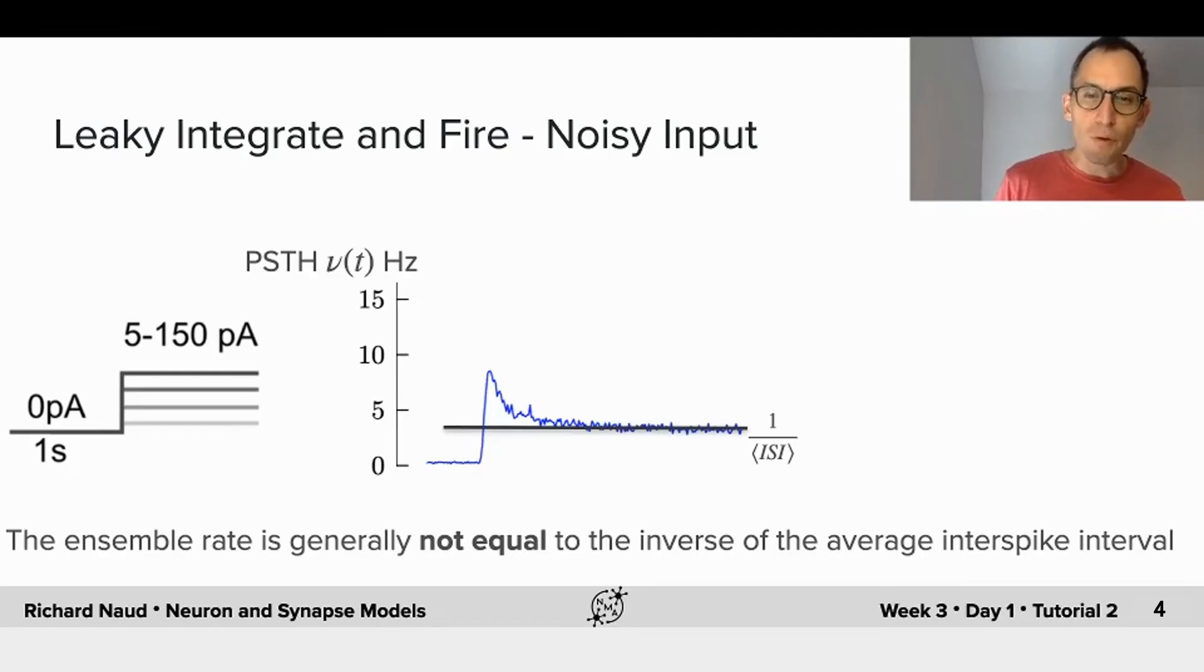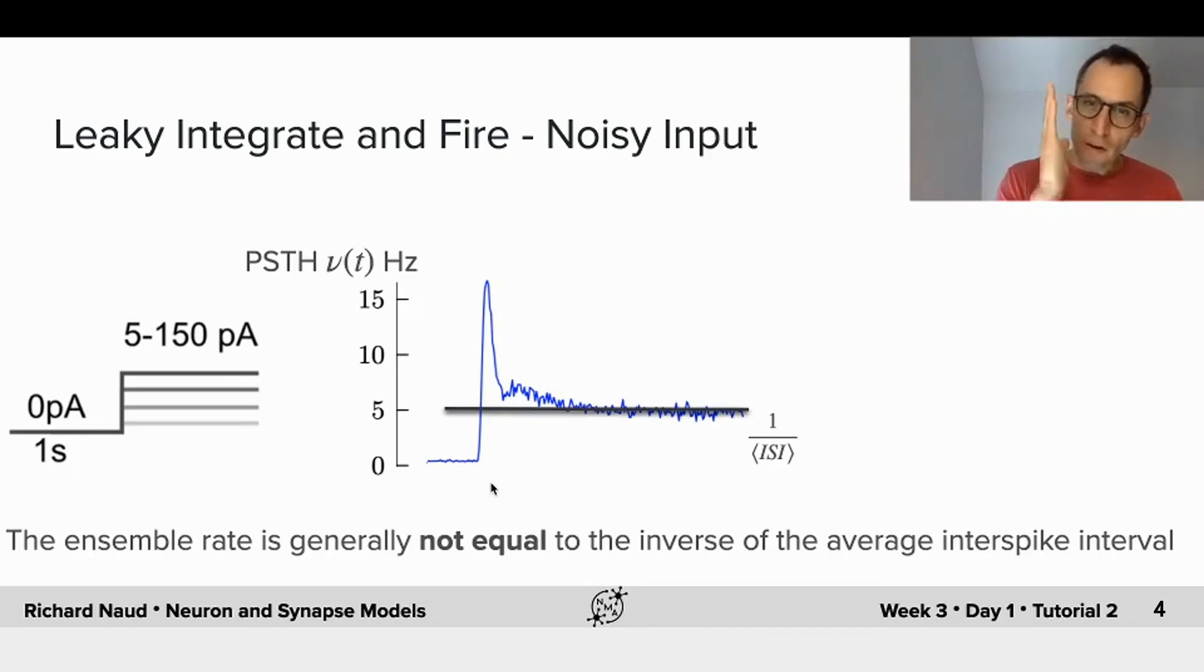But when the input is growing stronger, at the beginning of the response, just following the input transient, what we see is that the ensemble rate is shooting up. This is due to the fact that many neurons fire their first spike roughly all at the same time, particularly when the input is strong. But after that, their average rate is the same, and they gradually desynchronize, such that we lose this locking to the input step. So after some time, you reach the average of the inter-spike interval.